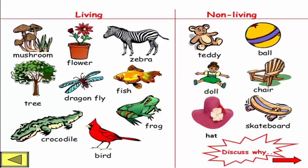Dragonfly — they can eat, grow, and move. Fish. Frog. Crocodile. Bird. They are all living things because they can grow, move, and need food.